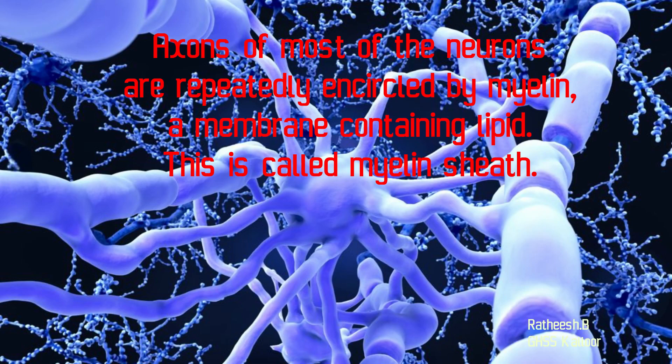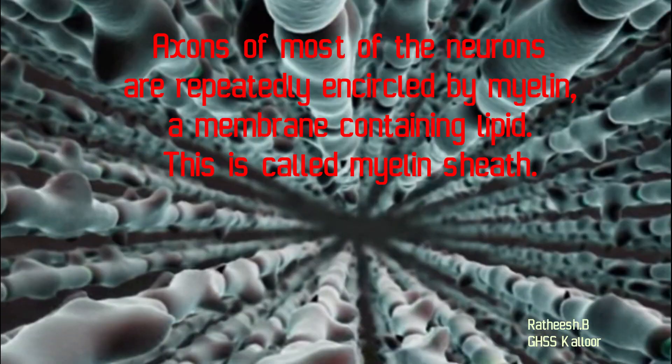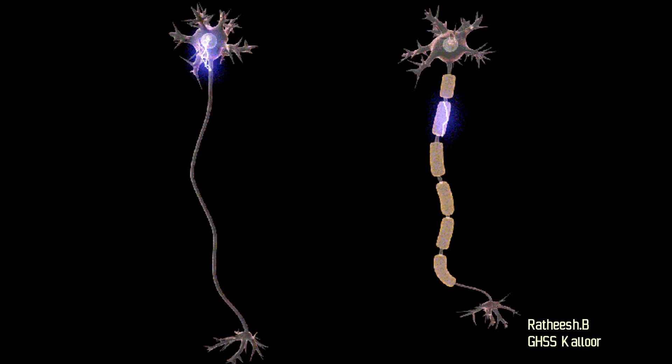Axons of most neurons are repeatedly encircled by myelin, a membrane containing lipid. This is called myelin sheath. Note that myelin sheath is present around the axon of most neurons, but there are also neurons that lack myelin sheath.